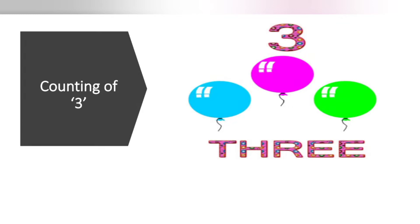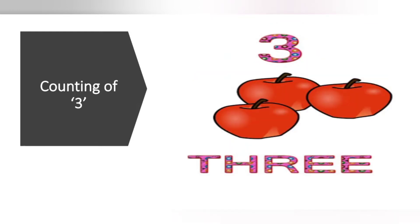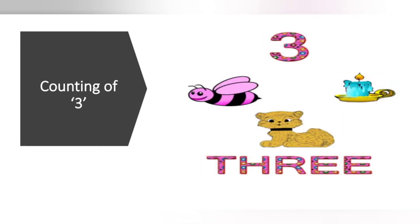Counting of number 3. 1, 2, 3 apples. Here are M&Ms, this is a bee. 1 cup, 2, and this one makes 3. Any objects - there are 3 objects.